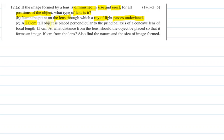Question number 3 is that a 2 cm tall object is placed perpendicular to the principal axis of a concave lens whose focal length is 15 cm. At what distance from the lens should the object be placed so that it forms an image 10 cm from the lens on the other side? We have to find the nature, size of the image, and the object distance. Let us see the answers.